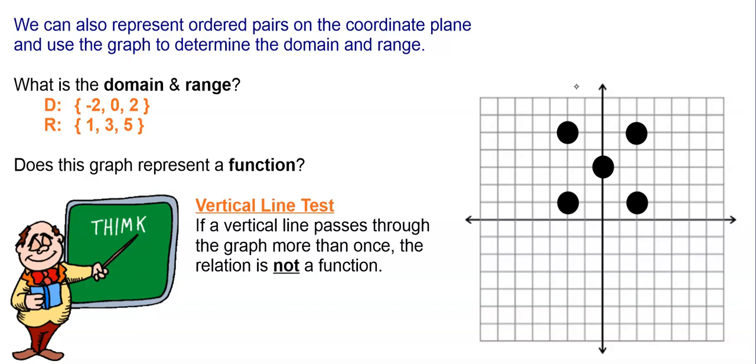Now, there's another way to determine if a graph is a function, and it is called the vertical line test. Basically, it says if a vertical line can pass through more than one point on the graph, then it is not a function. So, for example, right here, as I draw a vertical line, it passes through two points. So, because it passes through two points, this one is not a function.